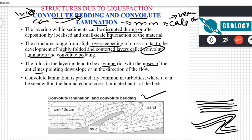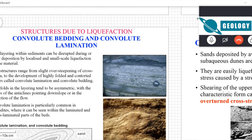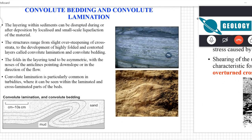The folds in the layering tend to be asymmetric, with noses of anticlines pointing downslope or in the direction of flow — just like we saw with slumps. Convolute lamination is particularly common in turbidites, where it can be seen within laminated and cross-laminated parts of beds. These are some other examples of convolute bedding and convolute lamination in the field.